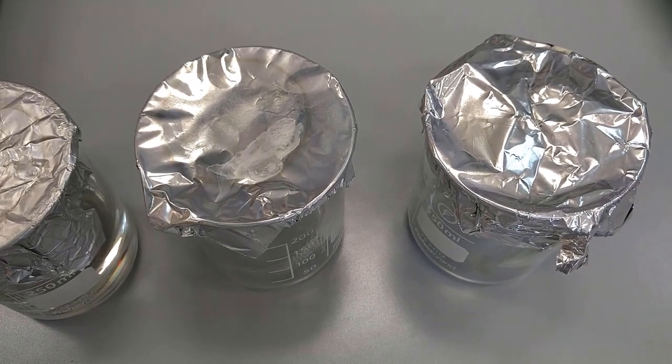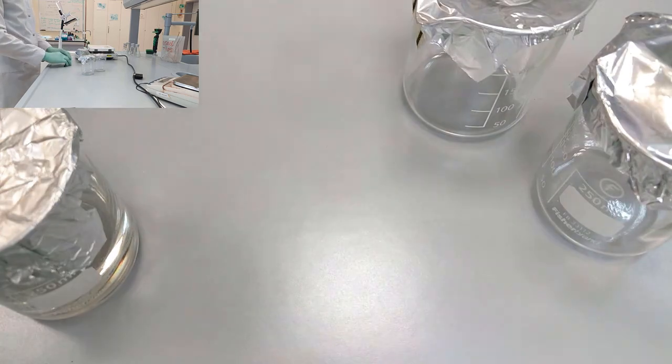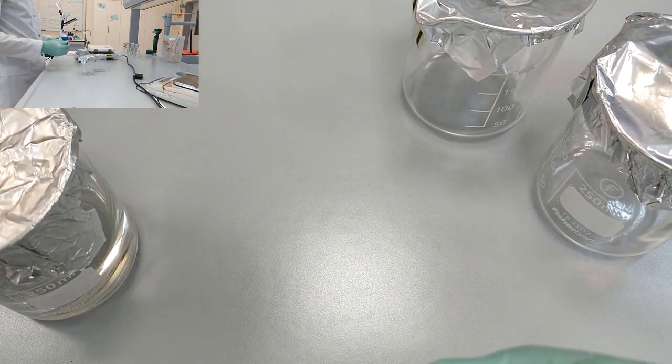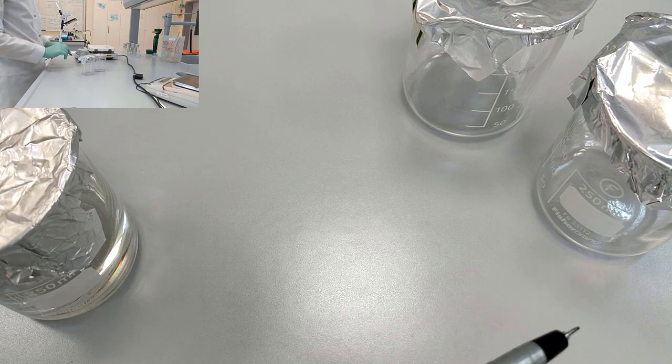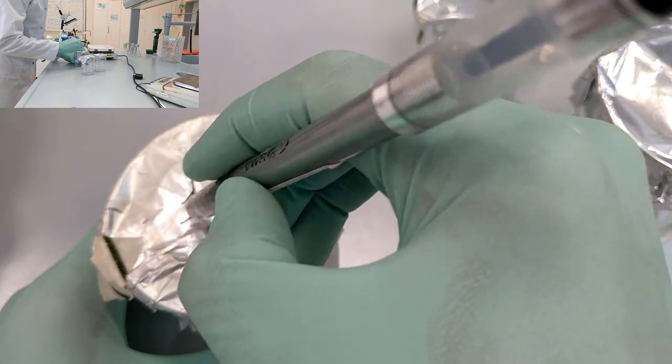So now we need to proceed to the second step, which is the dilution of the 1.2 molar concentrated glucose solution. We are going to prepare 0.8 and 0.4 molar concentrated glucose.